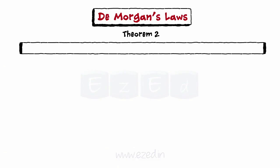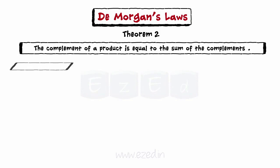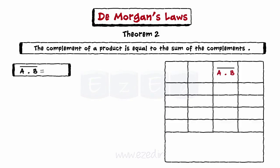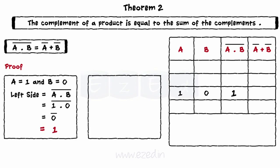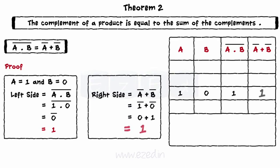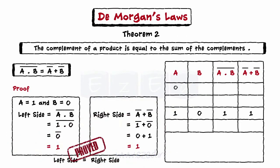The second De Morgan's law is: the complement of a product is equal to the sum of the complements. That is, (a dot b) bar equals a bar plus b bar. Assume a equals 1 and b equals 0. Left side equals (1 dot 0) bar equals 0 bar equals 1. Right side equals 1 bar plus 0 bar equals 0 plus 1 equals 1. As left side equals right side, the second law is also proved for all possible combinations of inputs.